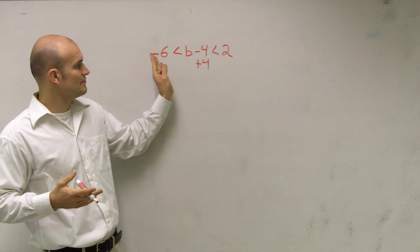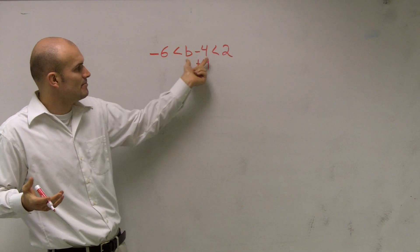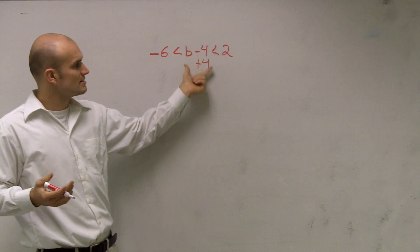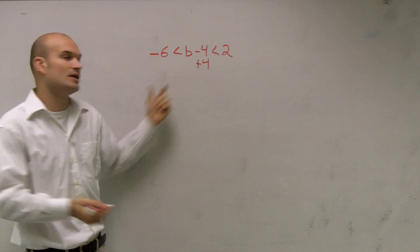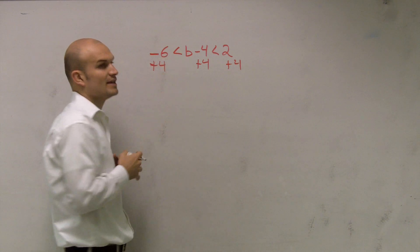Well here, I kind of have three separate sides here. You have a left side, a middle, and a right. Well, what I'm going to do is, since I'm adding 4 in the middle, I'm going to now want to add 4 to both the left and the right.